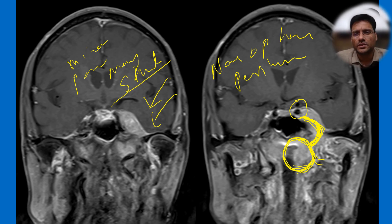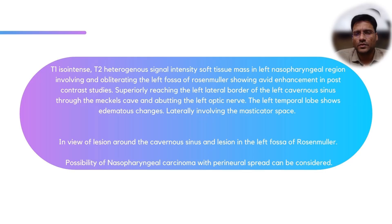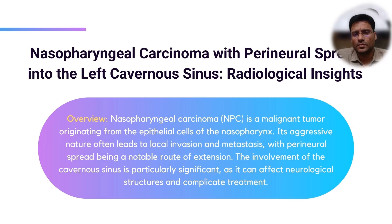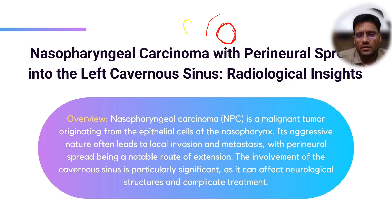Without the fossa of Rosenmüller mass, we would have called this a schwannoma or meningioma. This case was purely referred for brain MRI, but subsequently we went back to check the head and neck region and found the mass. Local invasion can occur and perineural spread also happens.